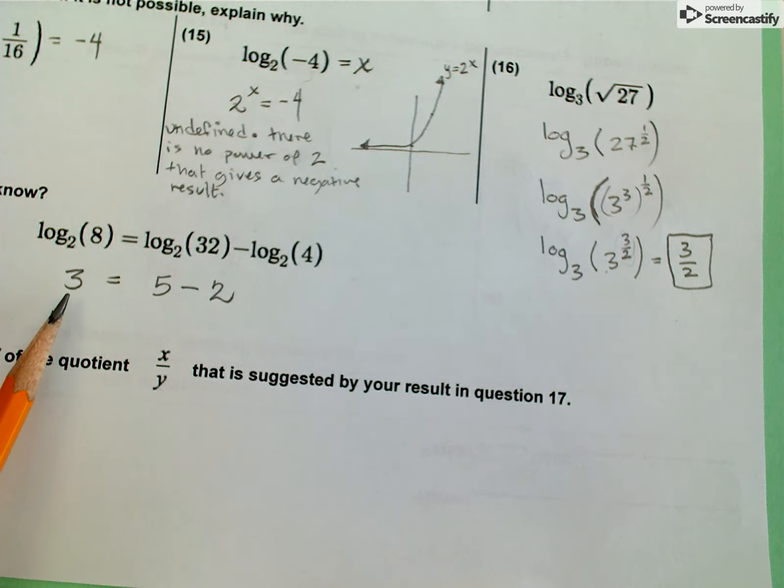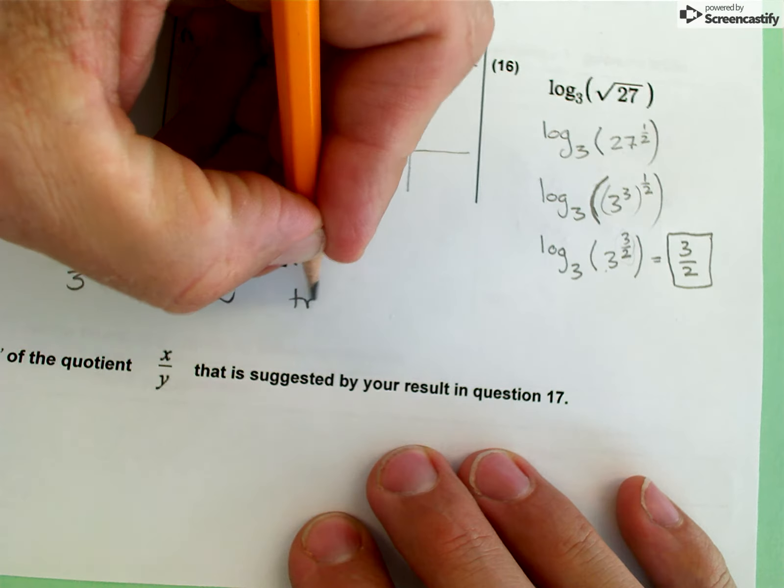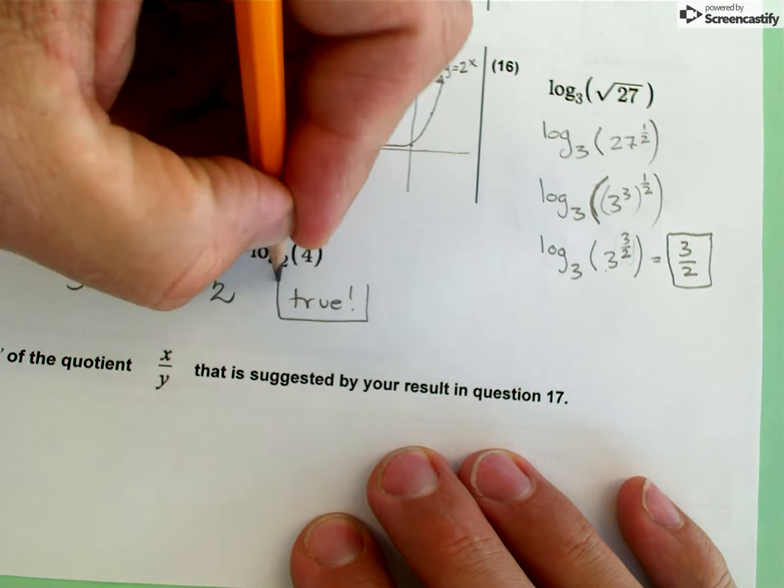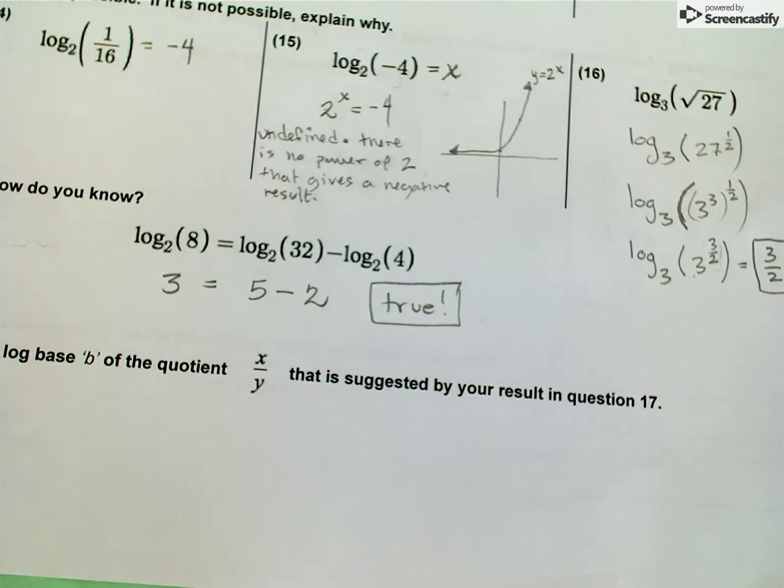So what we're seeing here is 3 equals 5 minus 2, which is true. And it's true because of the definition of the logarithm.